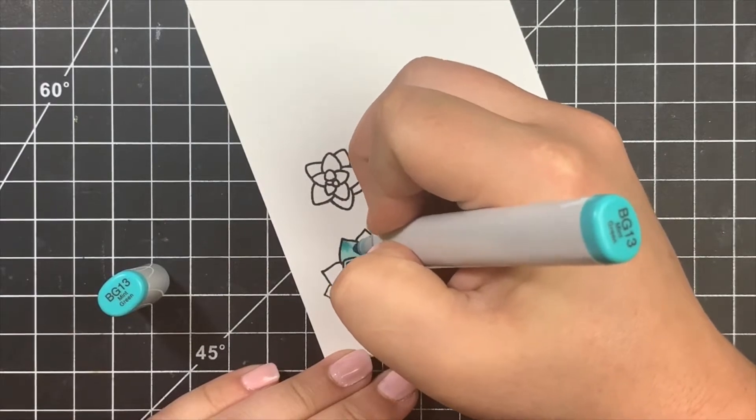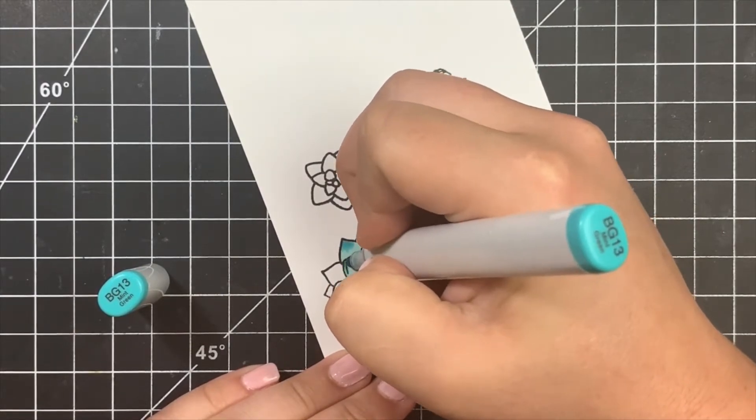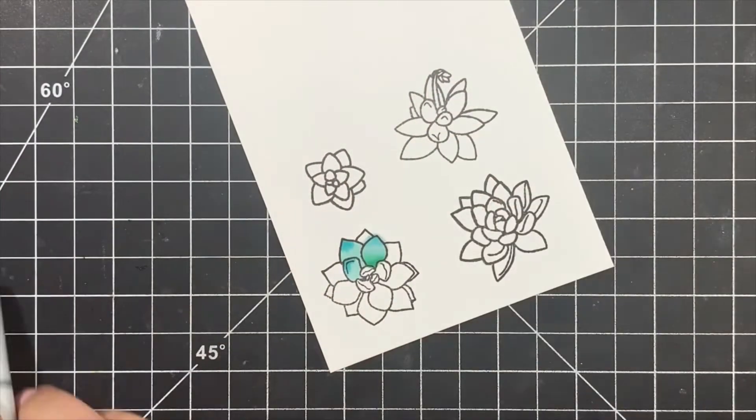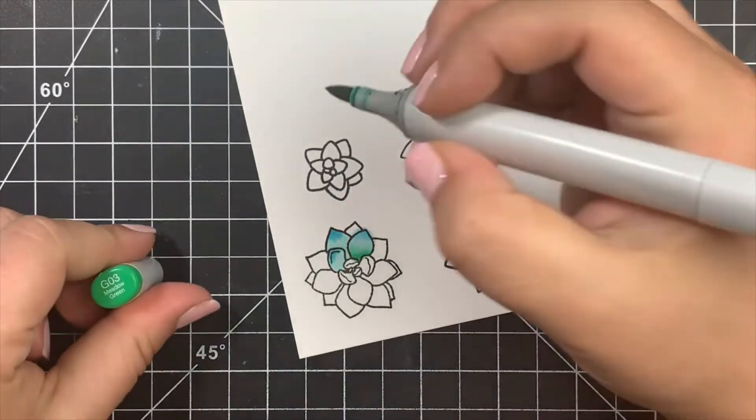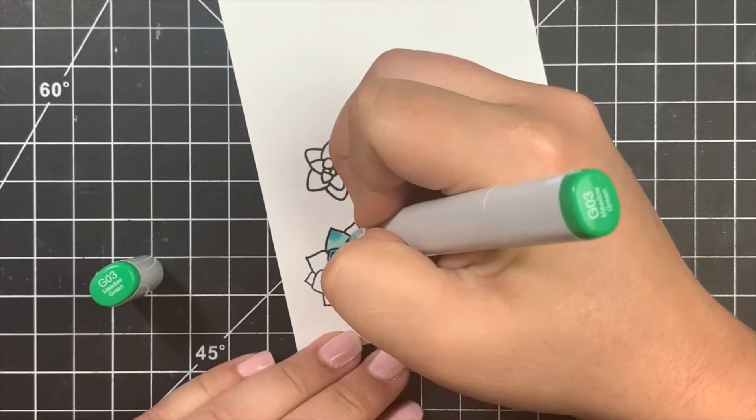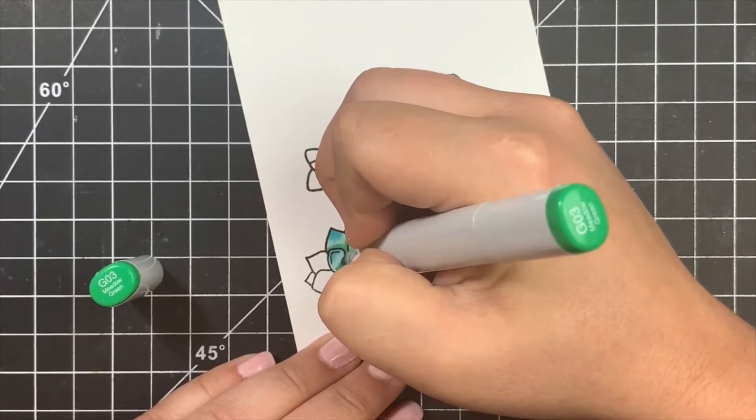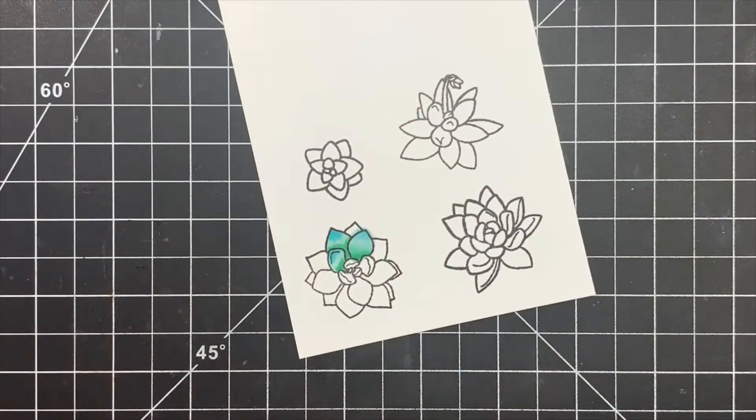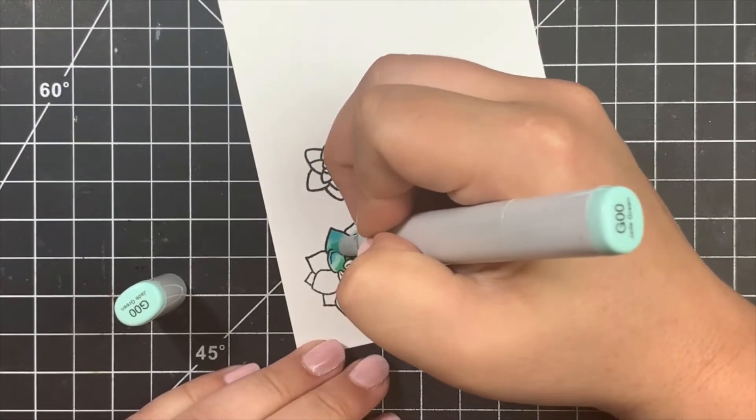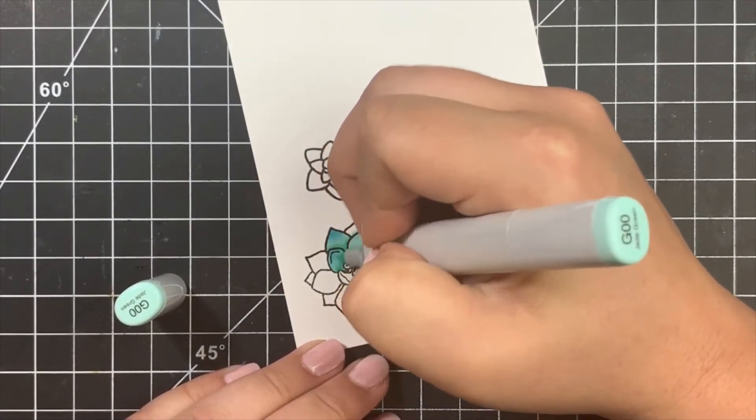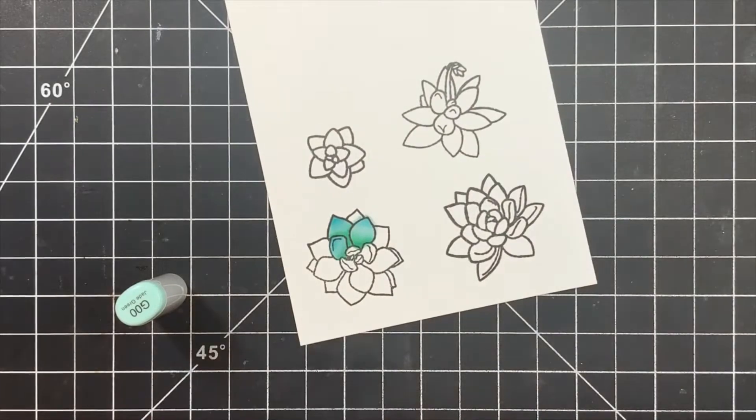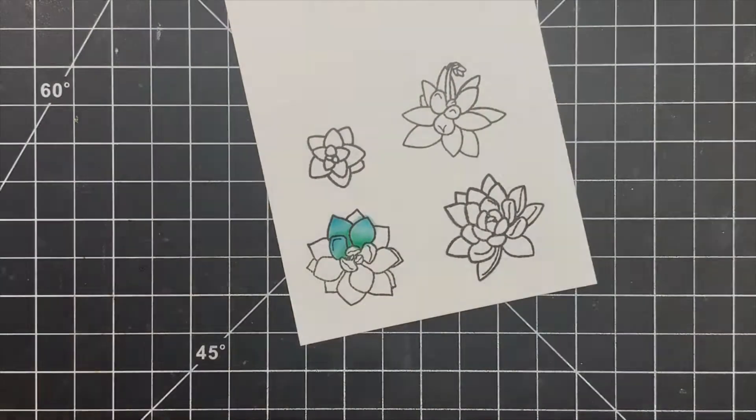Even though I'm using Neenah, which I prefer for Copic marker coloring, I did have just a little bit of bleeding because of the amount of saturation. Since I'm fussy cutting these out, I'm not too concerned. I can either take a colorless blender and fix those areas once they're dry, or I can take a white gel pen, which is usually the quickest and easiest. I finished up this succulent using the same color combination and technique.